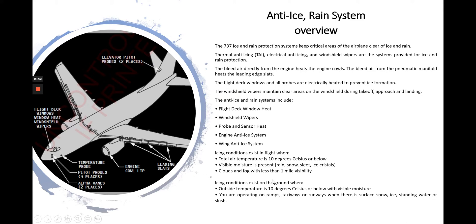Icing conditions on the ground exist when outside temperature is 10 degrees Celsius or below with visible moisture, and you are operating on ramps, taxiways, or runways where there is surface snow, ice, standing water, or slush.